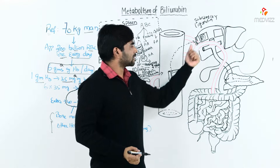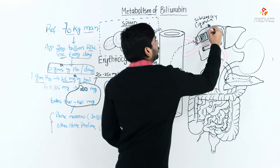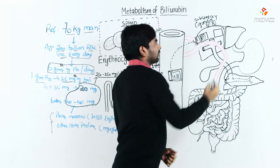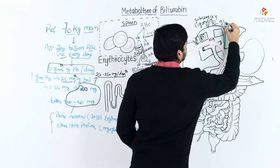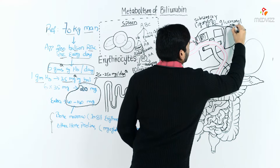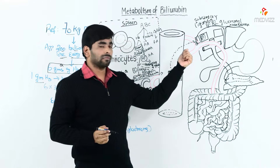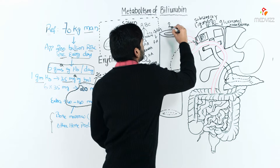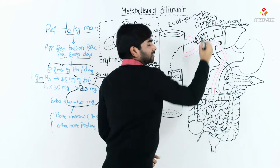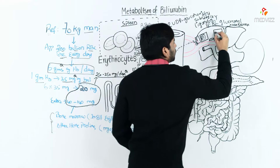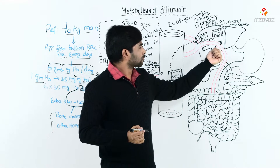Once binding with cytoplasmic proteins is done, the bilirubin enters the endoplasmic reticulum of hepatic cells, which contains the special enzyme glucuronyl transferase. With the help of glucuronyl transferase, bilirubin binds with 2 UDP-glucuronic acid molecules and converts into conjugated bilirubin.